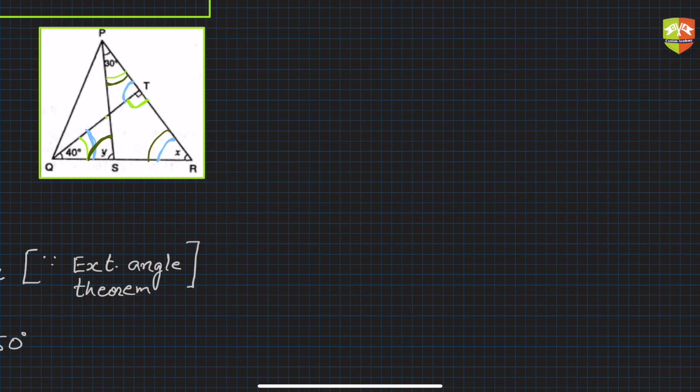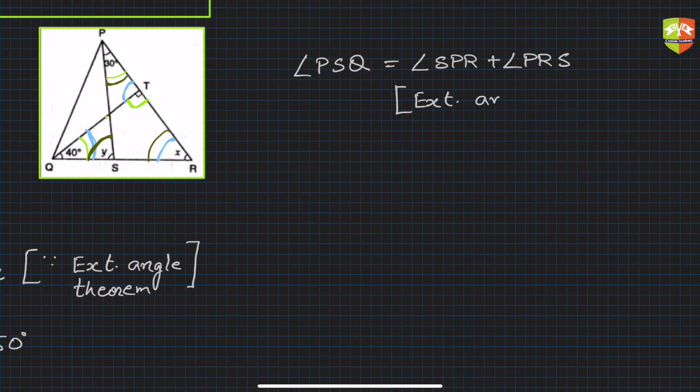angle PSQ. So I'm saying angle PSQ is equal to angle SPR plus angle PRS. Why is this? Again because of exterior angle theorem. Sum of interior opposite angles is exterior angle.